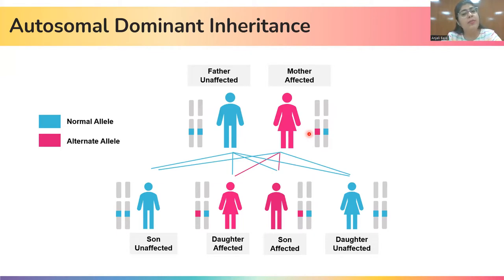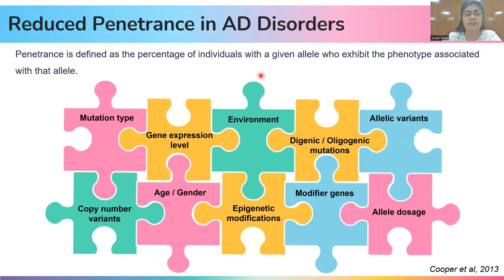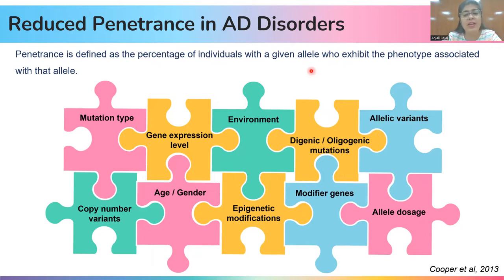This is the basic pattern of inheritance. But most of the time, the situation is a little tricky in case of autosomal dominant disorders, due to the reduced penetrance that mostly occurs in autosomal dominant disorders. Penetrance is defined as the percentage of individuals with a given allele who exhibit the phenotype associated with that allele. For example, if there are 100 people carrying the variant allele for an autosomal dominant disorder but only 40 of them are expressing the phenotype, then we say the penetrance is 40%, or reduced/incomplete.